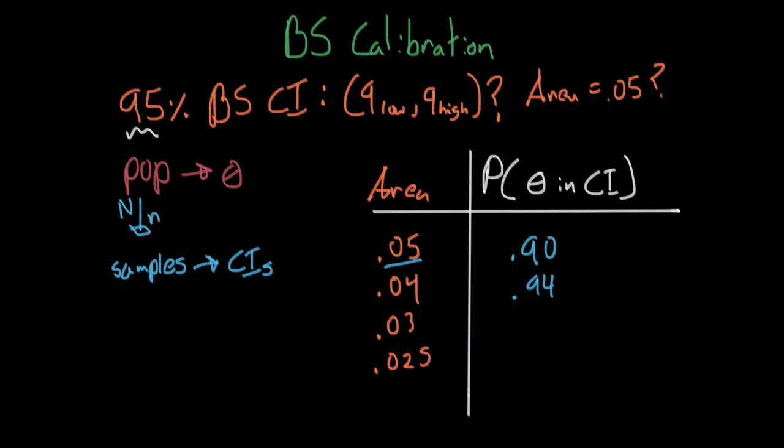Okay, we can't do this, right? Because we can't take lots and lots of samples from the original population. So what do we do instead?